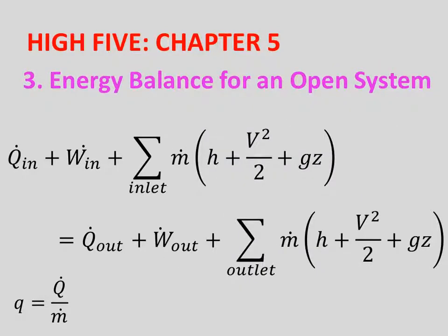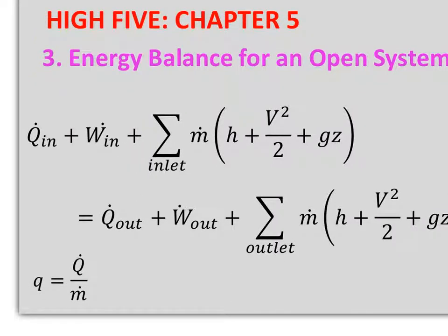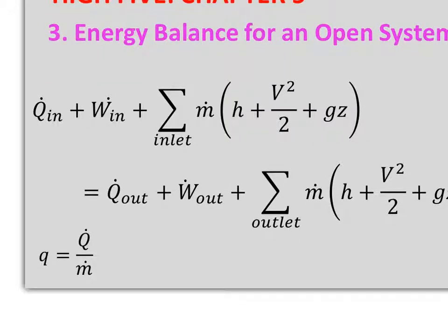For the energy balance of an open system, it's Q dot in plus W dot in plus the sum of m dot of the inlet times H plus V squared over 2 plus GZ equals Q dot out plus W dot out plus the sum of m dot of the outlet times H plus V squared over 2 plus GZ. To get the heat transfer in kilojoules, you take Q dot either in or out and divide it by m dot.